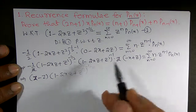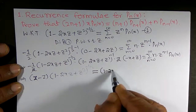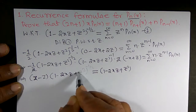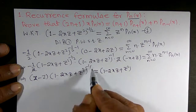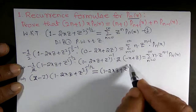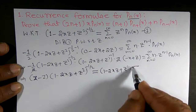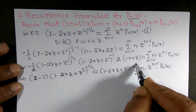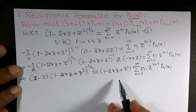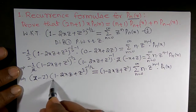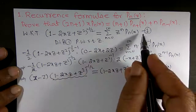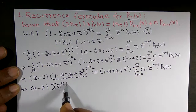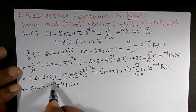Taking (1 − 2xz + z²) to the other side, it becomes (1 − 2xz + z²)^1 on the right. Substituting from equation 1, we replace (1 − 2xz + z²)^(−1/2) with the summation of zⁿ·Pₙ(x). This gives us: (x − z)·Σ zⁿ·Pₙ(x) = (1 − 2xz + z²)·Σ n·z^(n−1)·Pₙ(x).